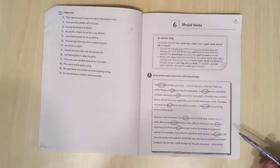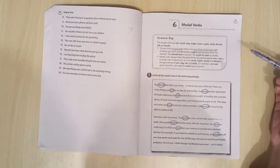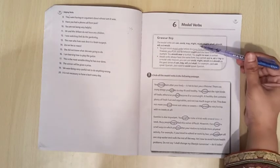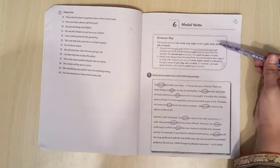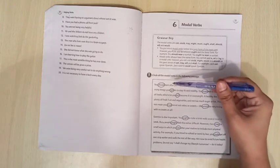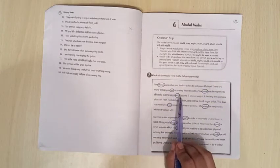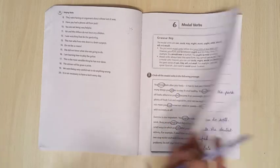Now come to the first exercise. Circle all the modal verbs in the following passage. Students, it is mentioned in the grammar help box that can, could, may, might, must, ought, shall, should, will, and would are modal verbs. So you have to just mark here: should, can, will, must, would, must, ought, might, can, may, could. All of these are the modal verbs.